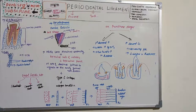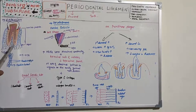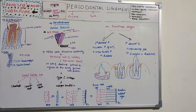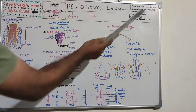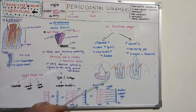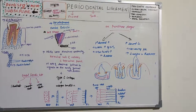The periodontal ligament communicates with the marrow spaces through vascular channels in the bone. It has many synonyms: periodontal membrane, alveolodental ligament, desmodont, perisementum, gomphosis, and dental periosteum.